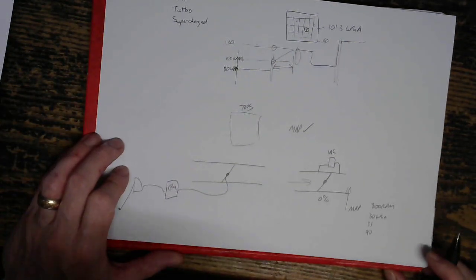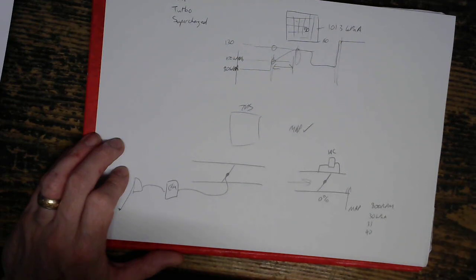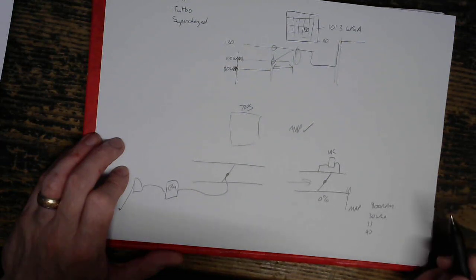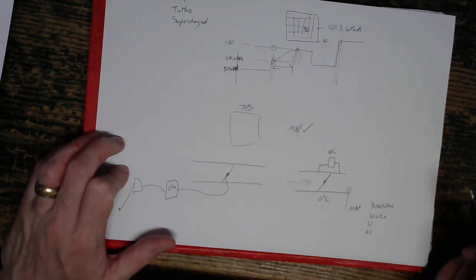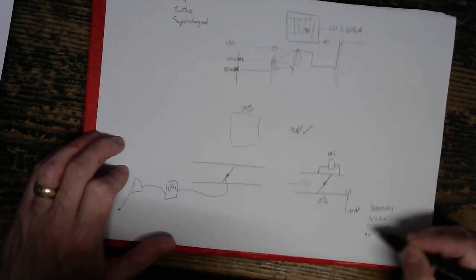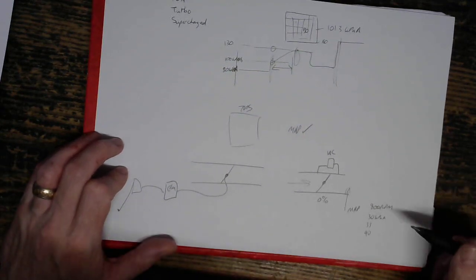So I think in an ideal world, you'd have a correction, or you'd 4D map the predicted MAP, based on this idle air amount as well, because it's definitely going to change the amount of air that goes in.